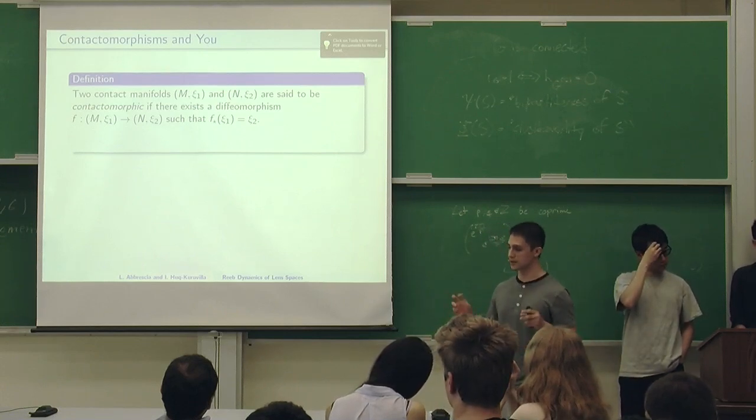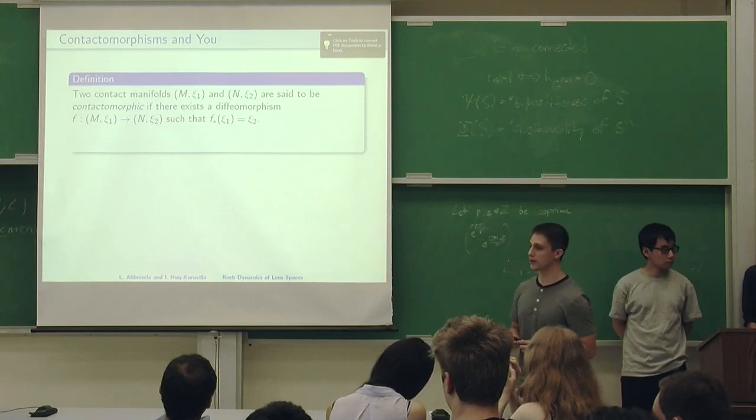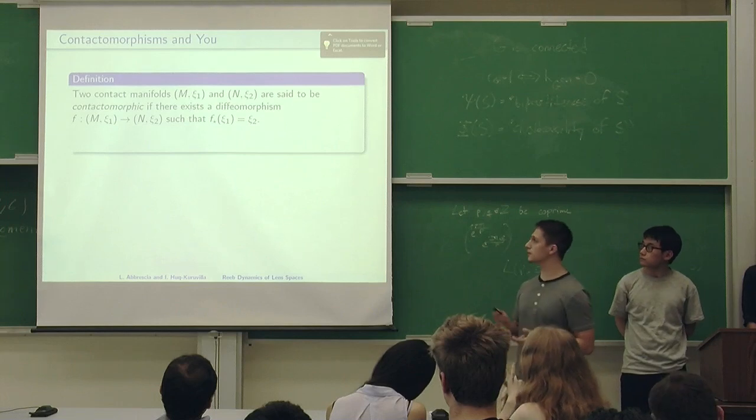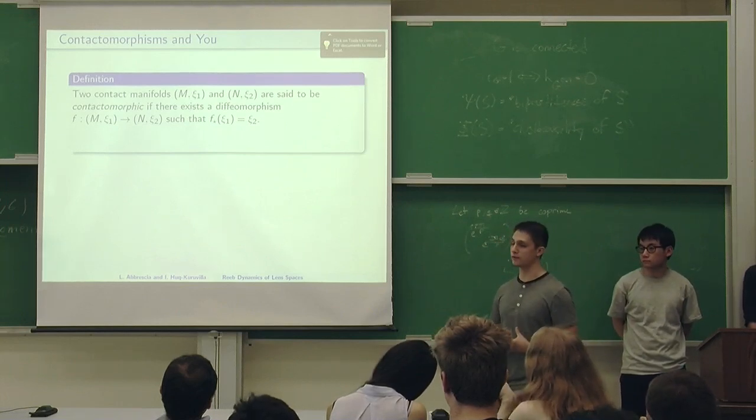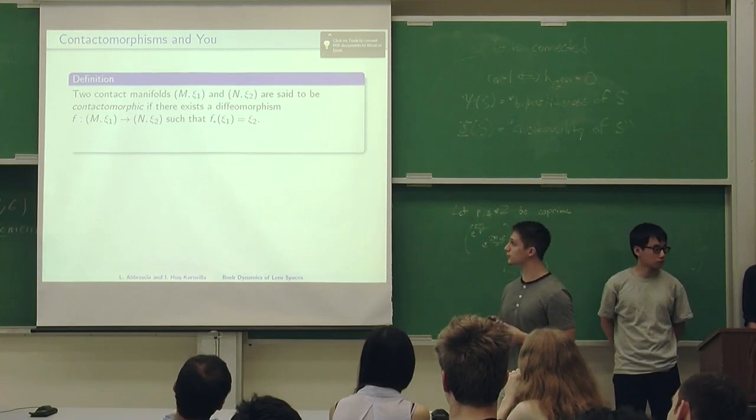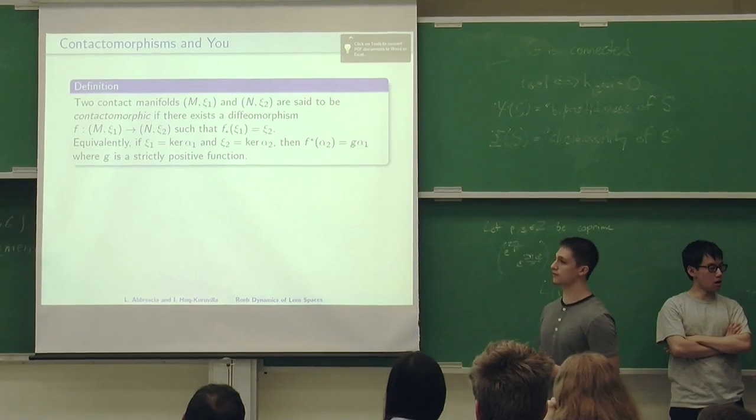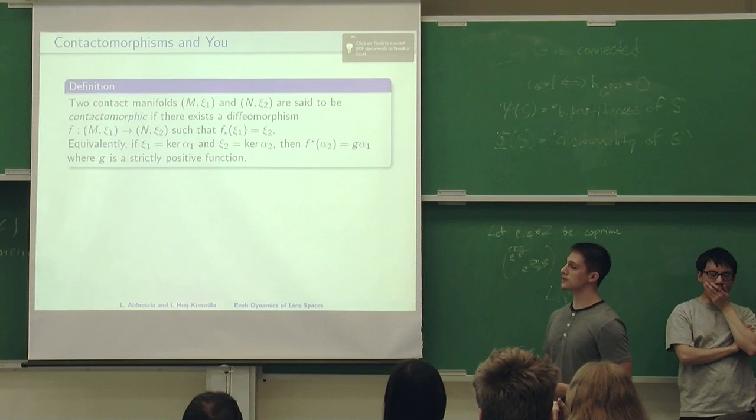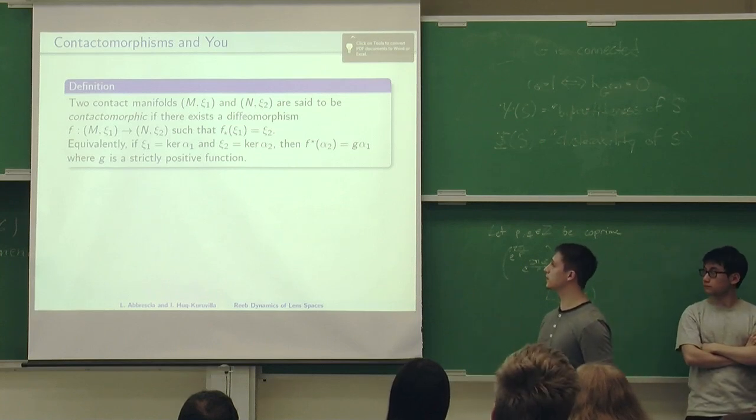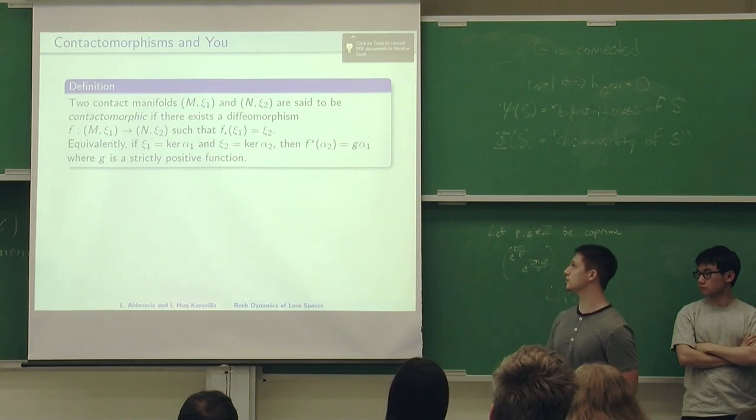Now that we know what contact manifolds are, let's try to define when they're similar. Two contact manifolds are contactomorphic if there's a diffeomorphism from one to the other such that the push forward of one contact structure is the same as the contact structure on the second one. We can define contactomorphisms with contact forms. If the first contact structure is the kernel of some form alpha 1, and the second one is the kernel of alpha 2, then we say they are contactomorphic if the pullback of the second form is G times the first form. This makes sense because the kernel of G times alpha 1 is the same as the kernel of alpha 1 if G is strictly positive. This leads us to conclude that the contact structure of the kernel of alpha 1 and the contact structure of G alpha 1 are the same.